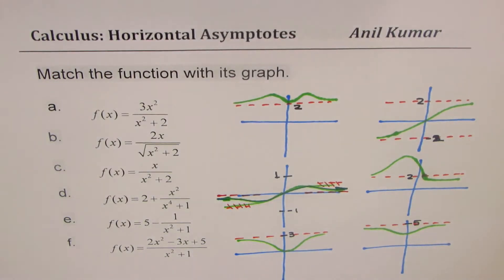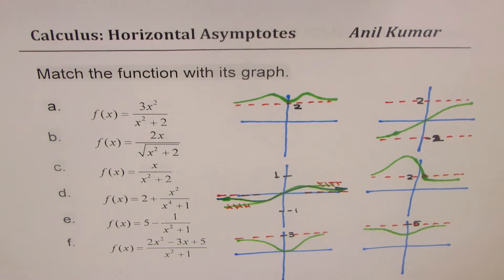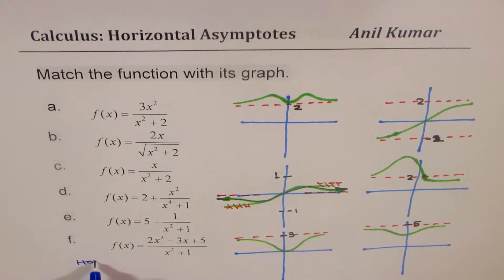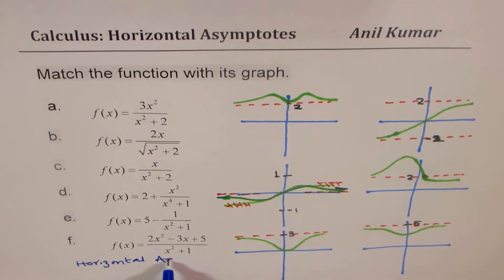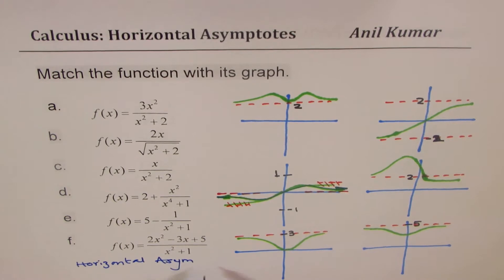I'm Anil Kumar sharing with you a test question on asymptotes. We are given six equations here and on the right side you see six graphs. You have to match each equation with their graph and you can take horizontal asymptote as the criteria for matching the graphs. Pause your video, match, and then look into my suggestion.